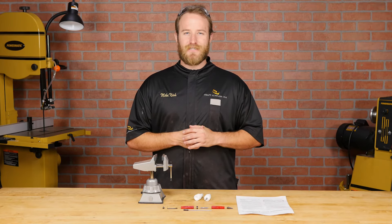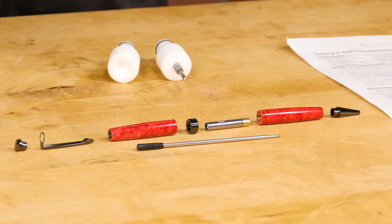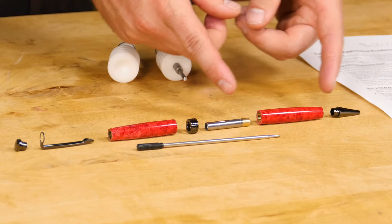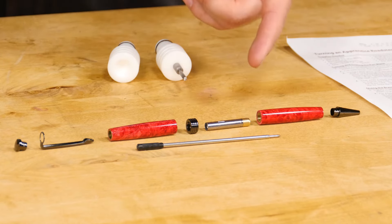Now that the blanks are finished, it's time for assembly. Check your instructions for the correct order of parts, then lay them out on the table accordingly. The pens we sell are all held together by press fitting the parts into the brass tube. Therefore, gluing the parts together is not necessary.